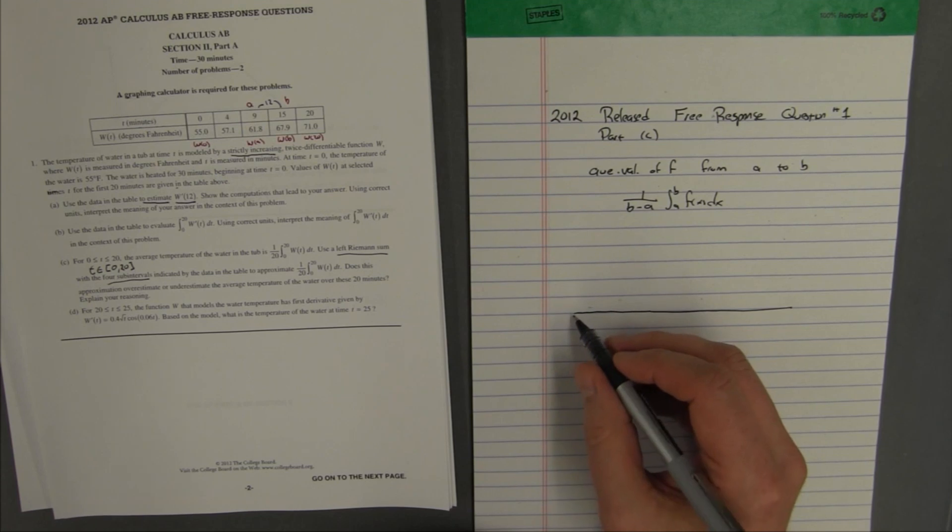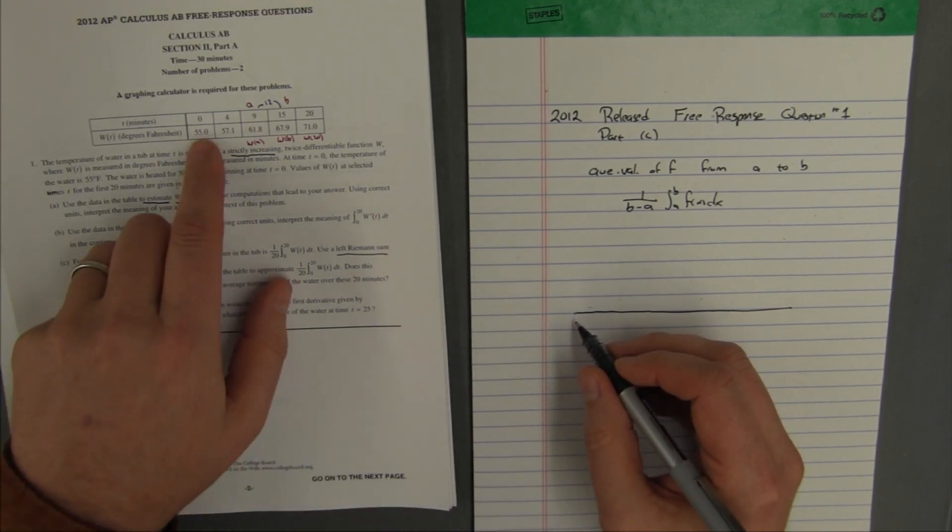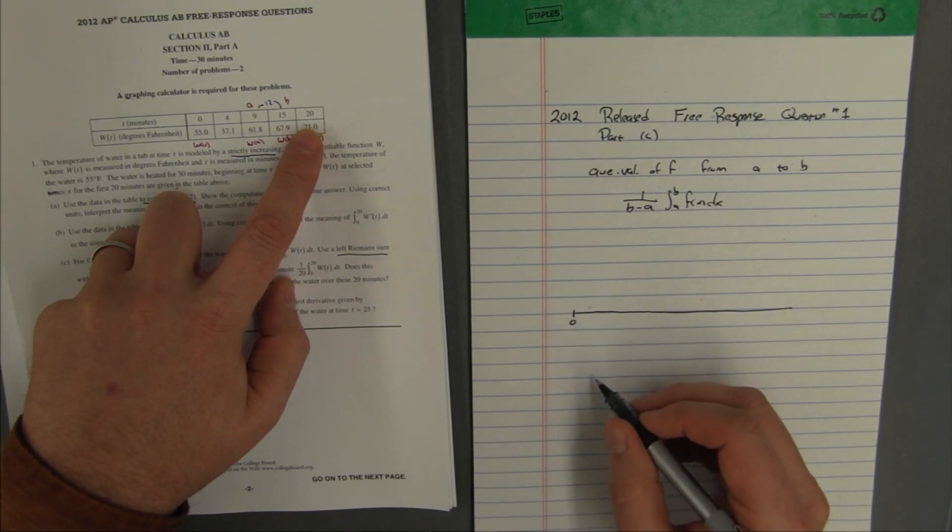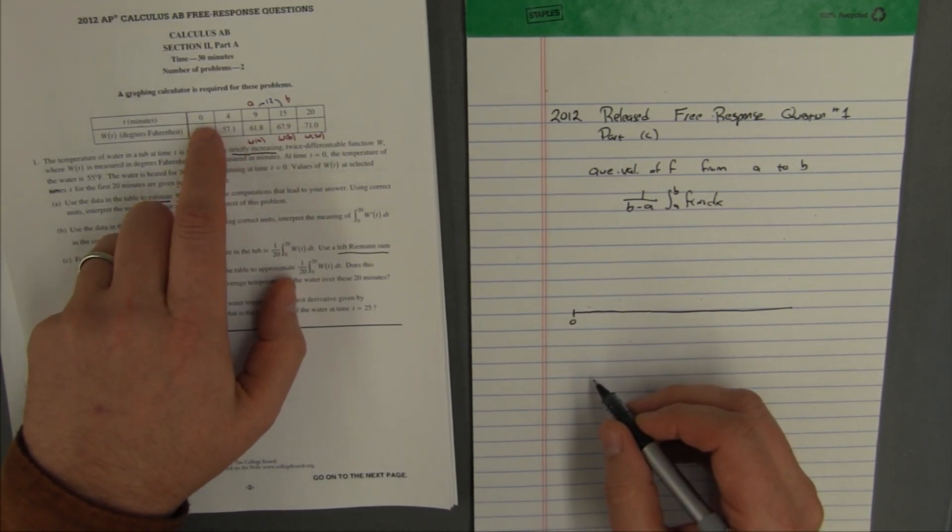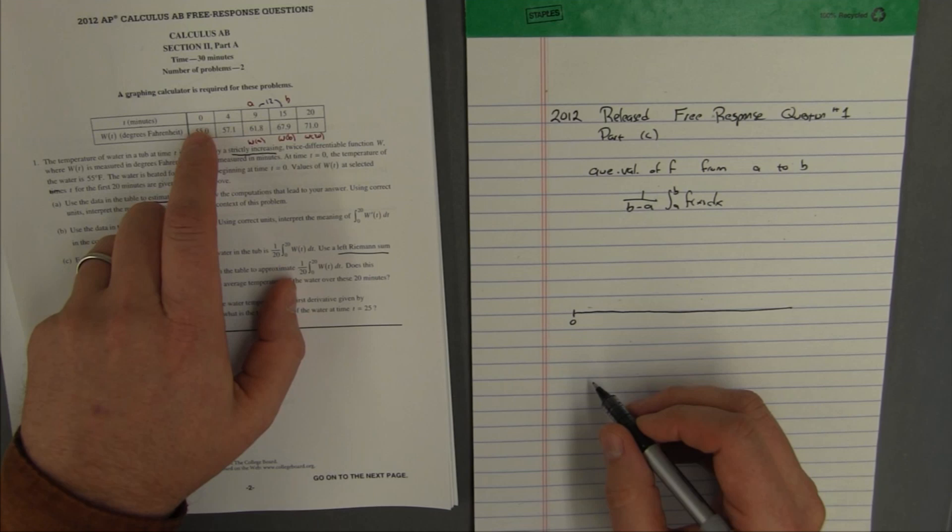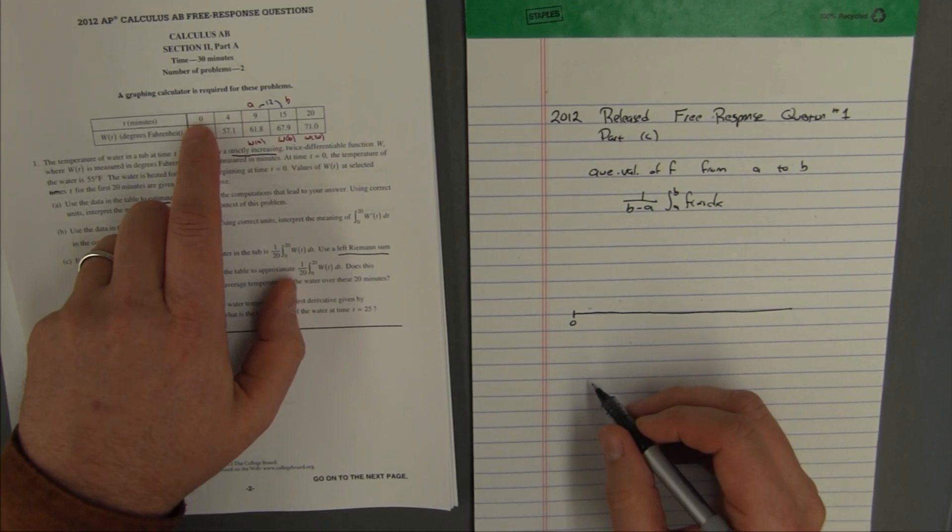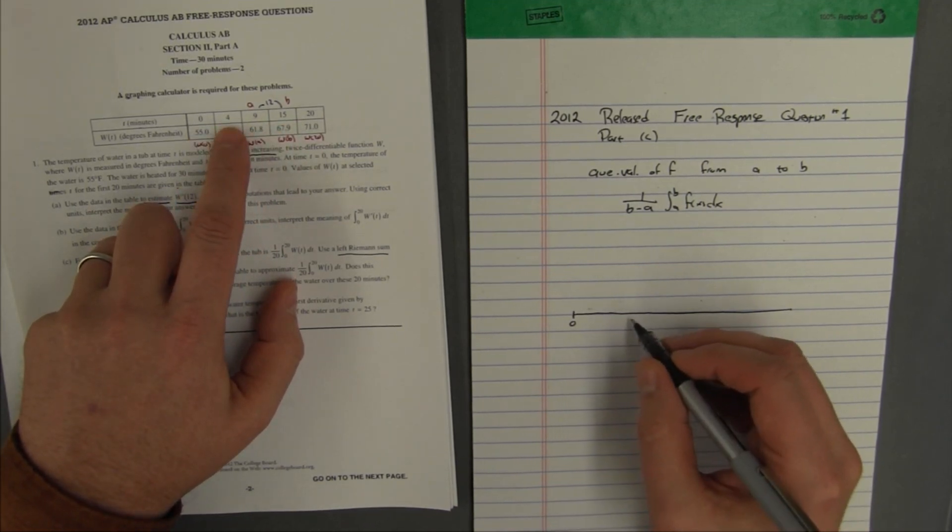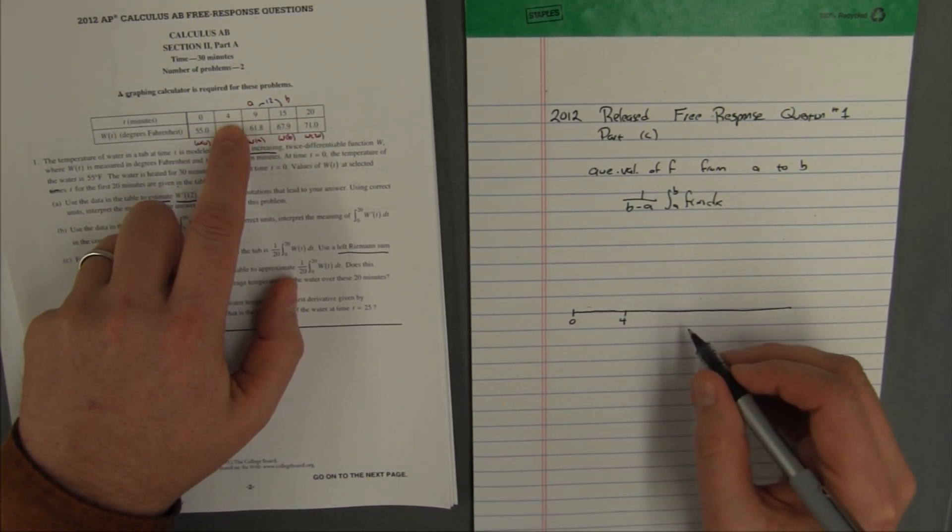So now what I usually do is I'll draw out my interval. I have 0, 4, 9, 15, and 20. Those are my x-coordinates. One thing I want to notice about them is that my x-coordinates are not evenly spaced. We're used to seeing if we went from 0 to 4 we would expect the next one to be 8, and then we expect the next one to be 12. But our spacings are not even. Now that's alright, we'll be able to handle that with our Riemann sum.